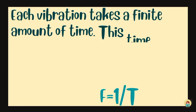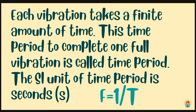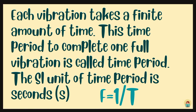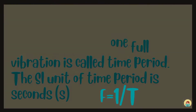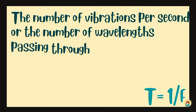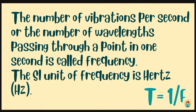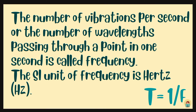What about frequency and time period? Each vibration takes a finite amount of time, and this finite time period to complete one full vibration is called time period. The SI unit of time period is seconds. The number of vibrations per second, or the number of wavelengths passing through a point in a second, is called frequency. The SI unit of frequency is hertz.